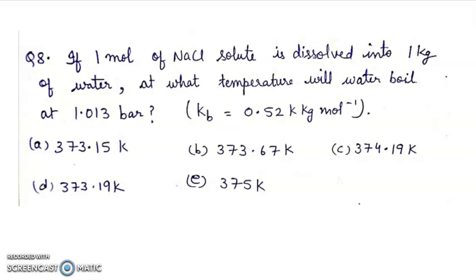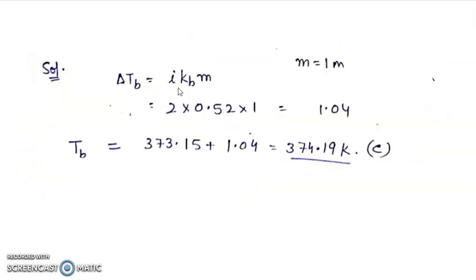Question 8: if one mole of NaCl solute is dissolved into 1 kg of water, at what temperature will water boil at 1.013 bar? Kb is 0.52 Kelvin kg mole inverse. Delta Tb equals i into Kb into m. i value is 2, Kb is 0.52, m is 1. Put the values. Tb dash will be Tb of pure water plus delta Tb.